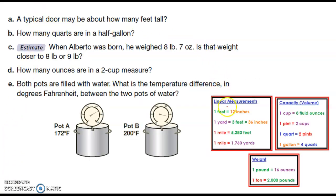So what I did was I brought in a chart of some measurements. There's actually a chart in your book as well, so it's probably one of those things that you're either going to want to copy into the back of your spiral or at least put a page number reference because you will use this throughout the year. So a typical door may be how many feet tall. If I'm about six feet tall and the door is taller than me, I'm going to say seven feet.